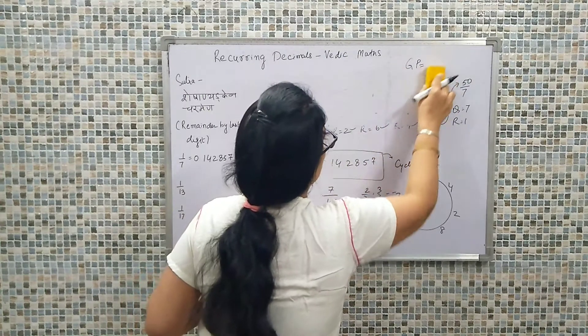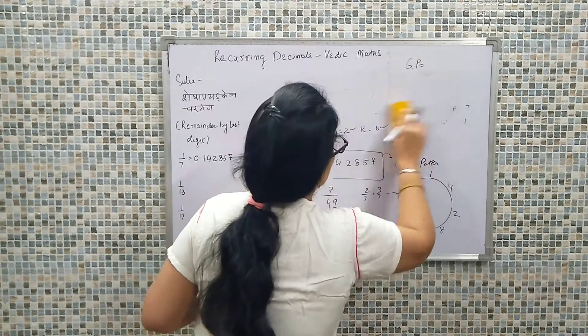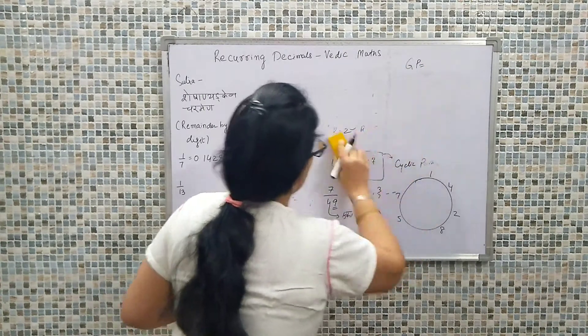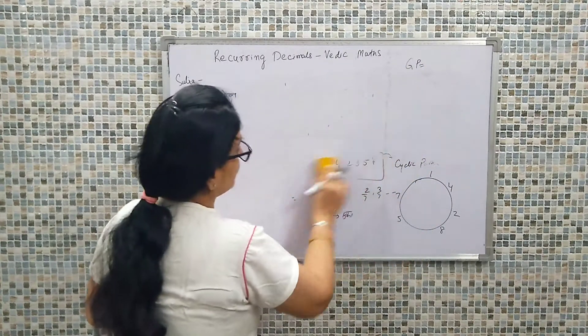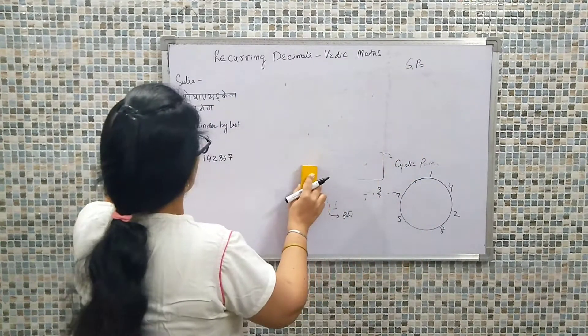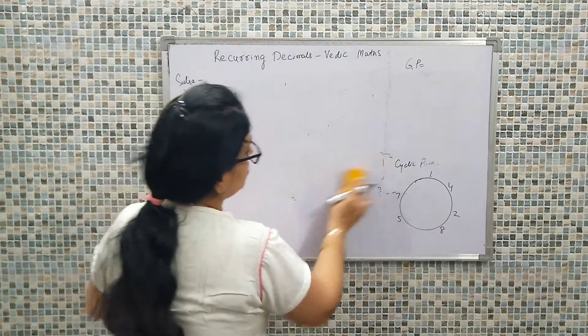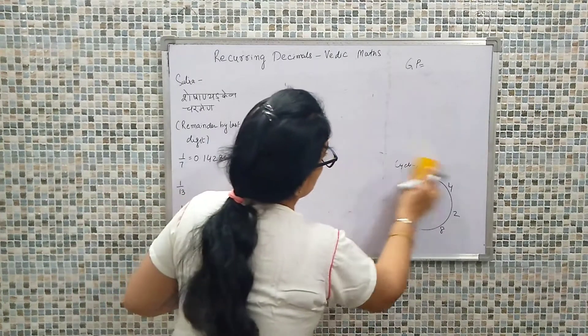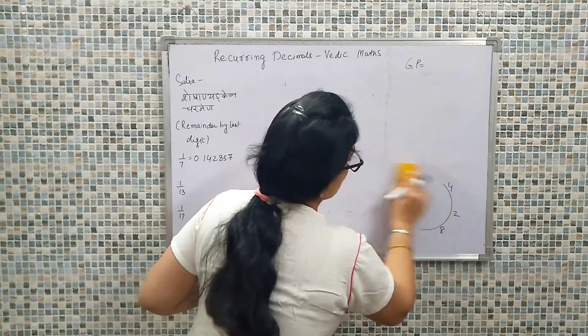So that was about 1 upon 7, which comes out to be 0.142857. Here we multiplied the remainder value using the GP factor, and step by step we were able to calculate the quotient values — basically using the remainder as the core concept behind this sutra.